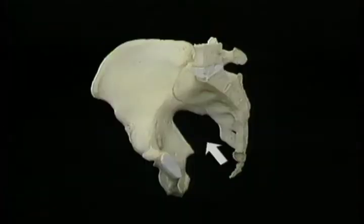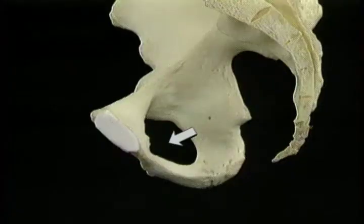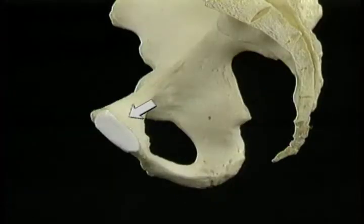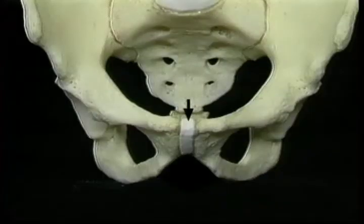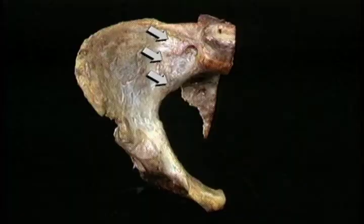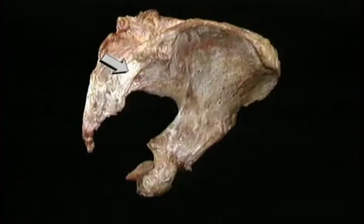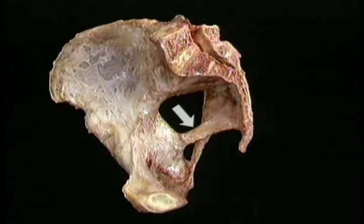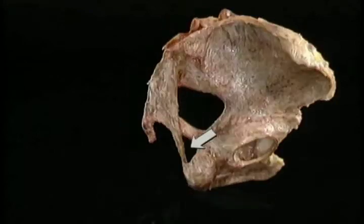Let's review what we've seen of the bones and ligaments that surround the pelvic cavity. Here's the hip bone, the sacrum, and the coccyx. Here's the sciatic notch, the pelvic brim, the obturator foramen, the body of the ischium, the ischial spine, and the ischial tuberosity. Here's the body of the pubis, the ischiopubic ramus, the pubic symphysis, and the pubic arch. Here are the sacroiliac ligaments, anterior and posterior. Here's the sacrotuberous ligament and the sacrospinous ligament. Here's the greater sciatic foramen and the lesser sciatic foramen.